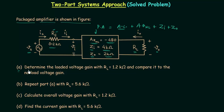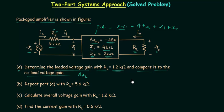In part A we need to determine the loaded voltage gain AVL with load resistance equal to 1.2kΩ. We also need to compare it to the no-load voltage gain AVNL. So the two tasks are: find AVL with RL equal to 1.2kΩ, and then compare it with AVNL.